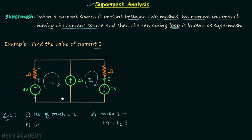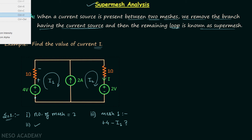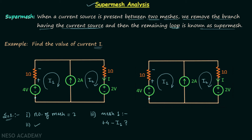To perform the analysis we will remove the branch having the current source — we entirely remove this branch. Copying the given network, we remove the branch with the current source. After doing this we have a new network, and we can clearly see that we now have a loop. This loop is a mesh, and this mesh is known as the super mesh.